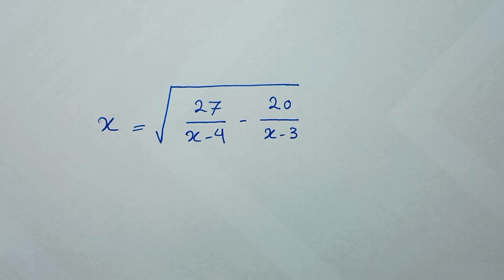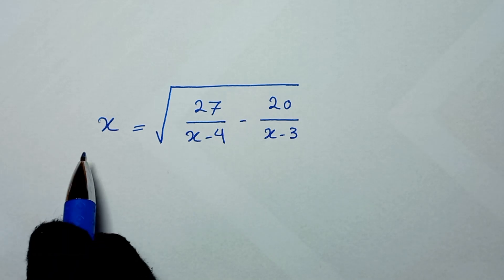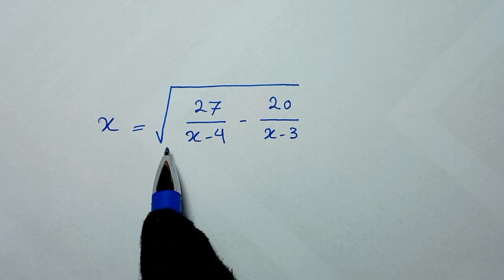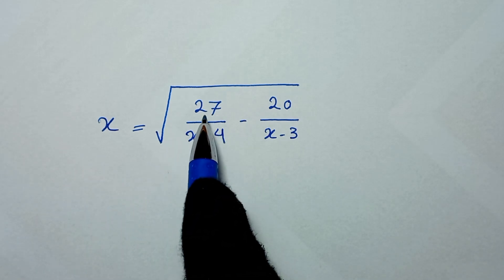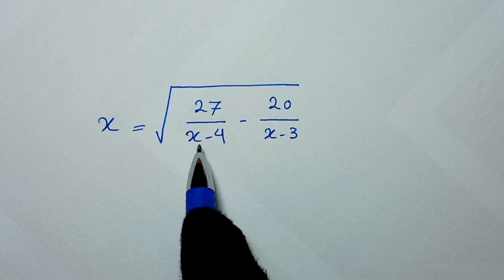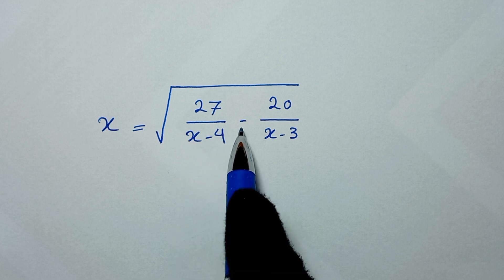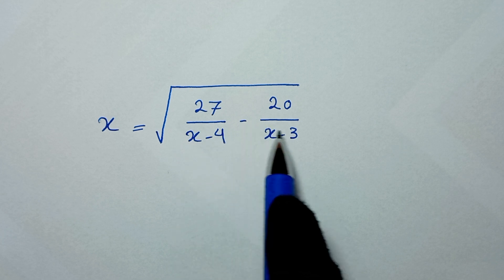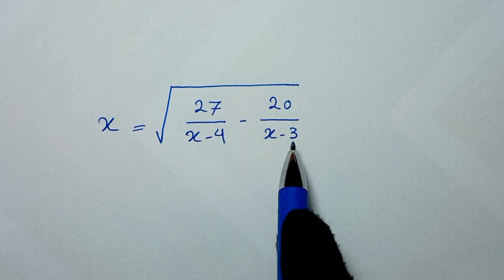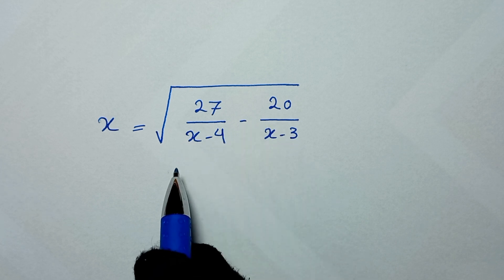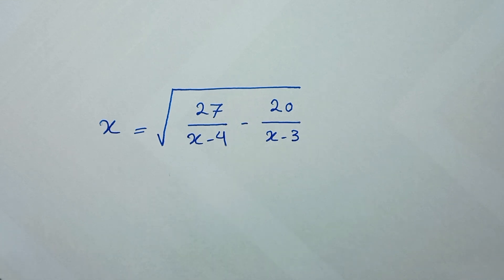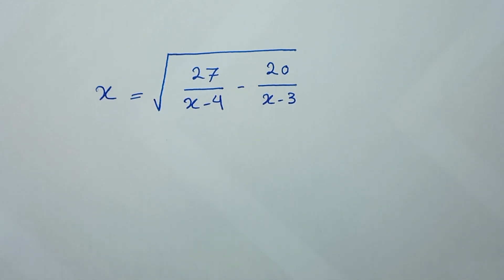Hello my friends, you're welcome to solve this math problem which is x is equal to the square root of 27 over x minus 4, minus 20 over x minus 3, to find the values of x.